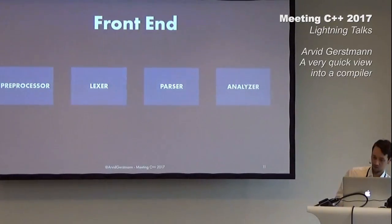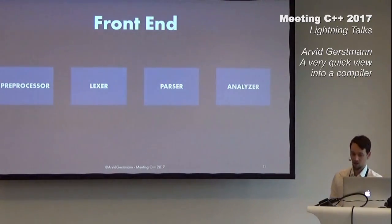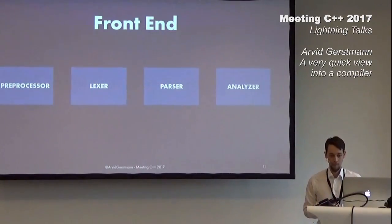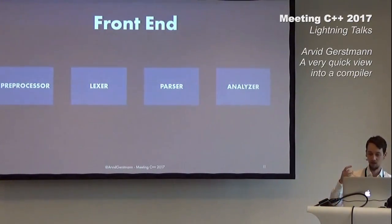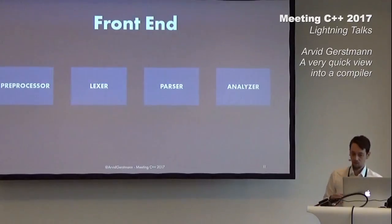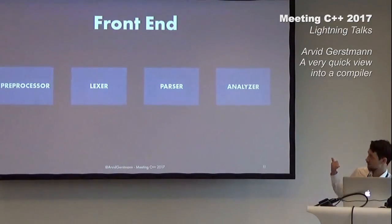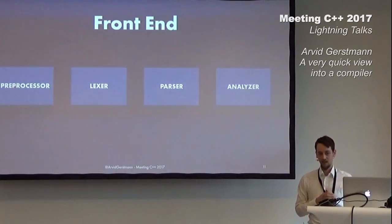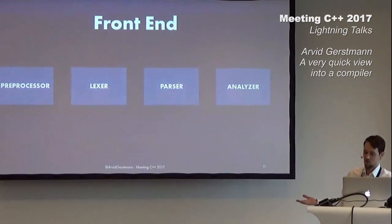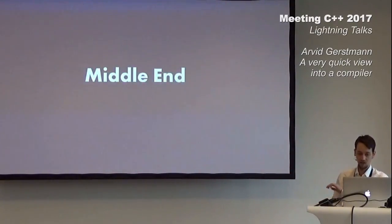Last but not least in the front end, we have a very important part: the analyzer, or semantic analyzer as it's usually called. It will build a symbol table and annotate the syntax tree. Lots of different information is added — for example, the type of variables, which can later be used for static type checking. The analyzer will then analyze our source code for semantically incorrect constructs. For example, if we try to return a string from our add function, we would get an error, because the return type was int. The now annotated abstract syntax tree is then converted into the IR and passed into the next stage, the middle end.